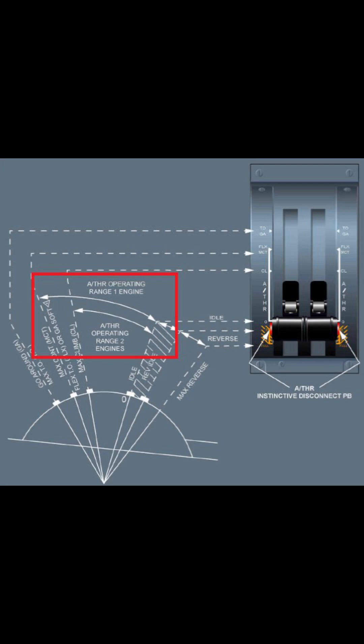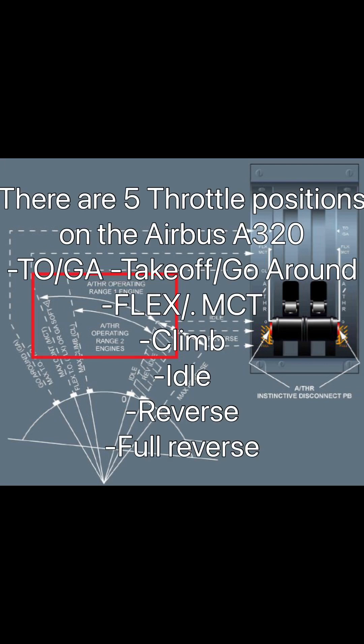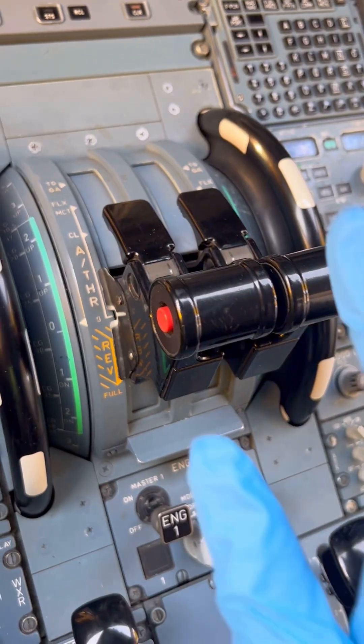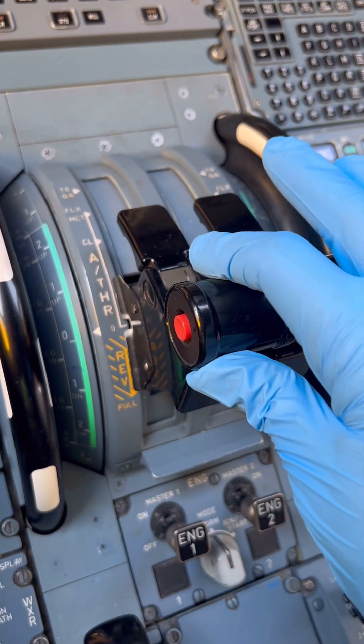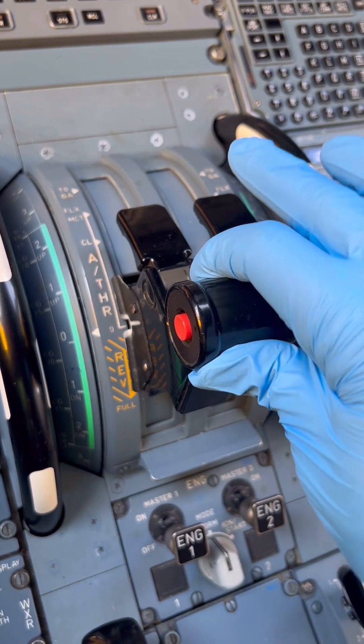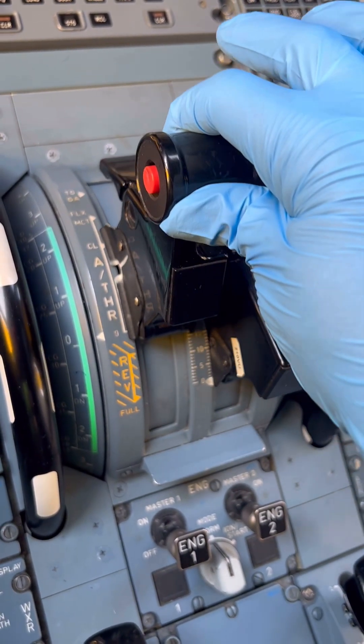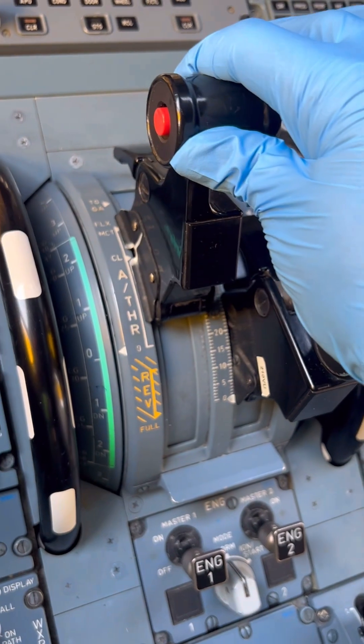Back on our Airbus A320 cockpit, the thrust lever movement is broken down into stops, or what we call detents. We start with the idle position — this is where you are when you start the engine and the engine is stabilized. Then we move to CL, that is climb.